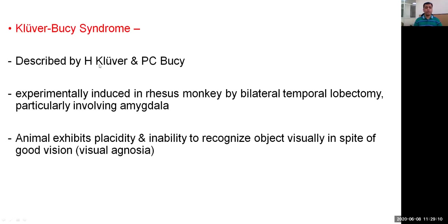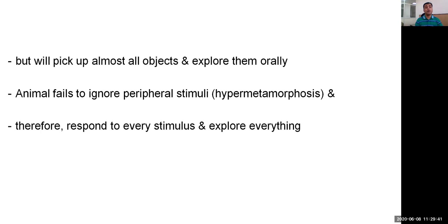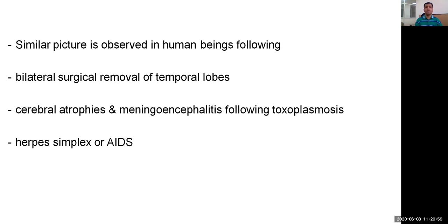Kluver-Bucy syndrome was originally described by H. Kluver and T.C. Bucy, and hence the name. It is experimentally induced in rhesus monkeys by bilateral temporal lobectomy particularly involving the amygdala. Animals exhibit placidity, inability to recognize objects visually despite good vision — called visual agnosia — and pick up almost all objects and explore them orally. Animals fail to ignore peripheral stimuli, called hypermetamorphosis, and therefore respond to every stimulus. A similar picture is observed in humans following bilateral surgical removal of temporal lobes, cerebral atrophy, and meningoencephalitis following toxoplasmosis, herpes simplex, or acquired immunodeficiency syndrome.